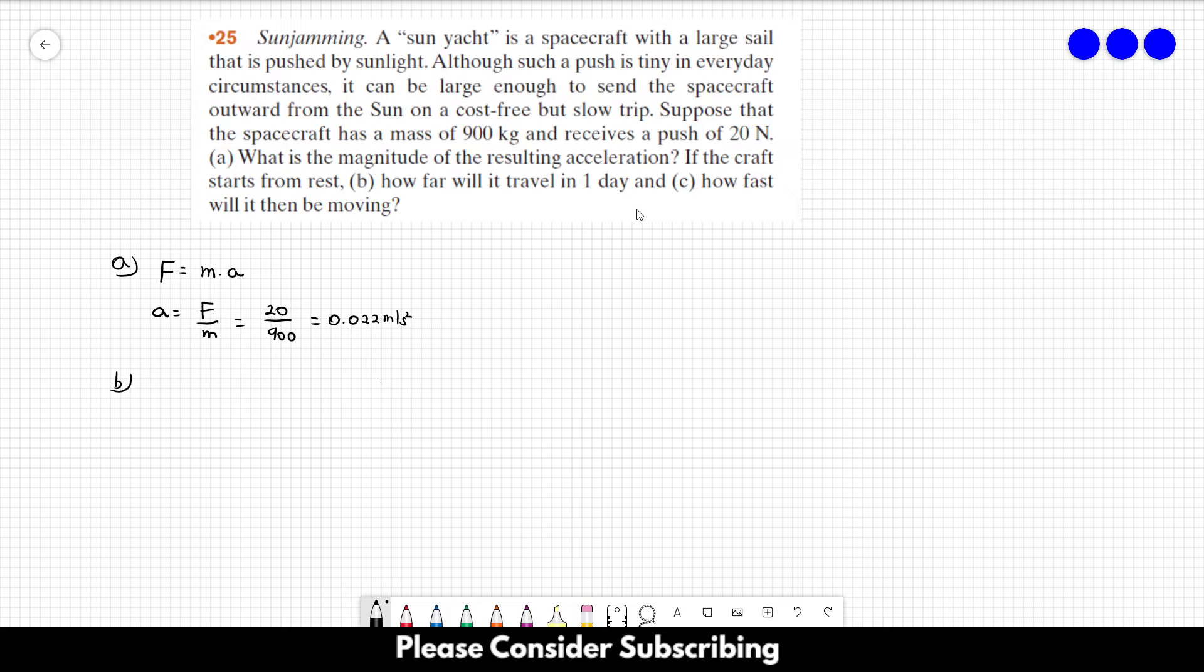For letter B, we want to know how far we will travel in one day. So let's remember that if the acceleration is constant, x is equal to x0 plus V0T plus AT squared over 2. We can say that the initial position is zero, so let's cross this term out. The spacecraft starts from rest, so V0 is equal to zero. So the position is equal to the acceleration T squared over 2.